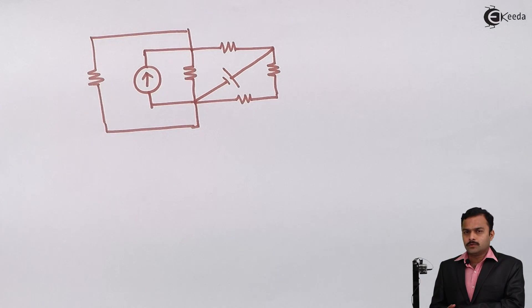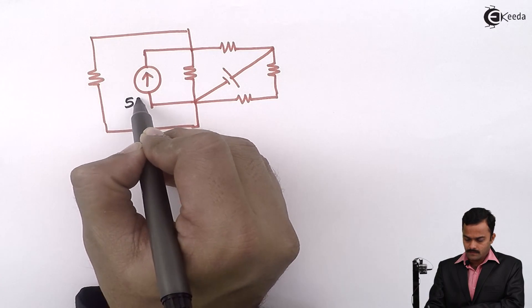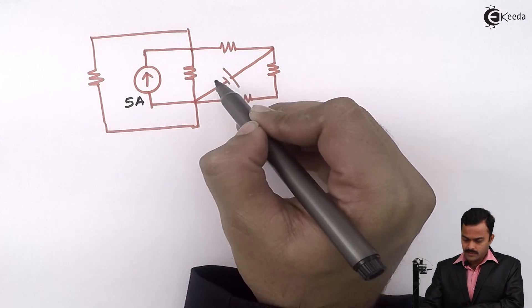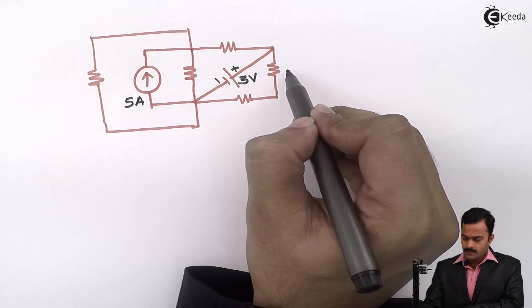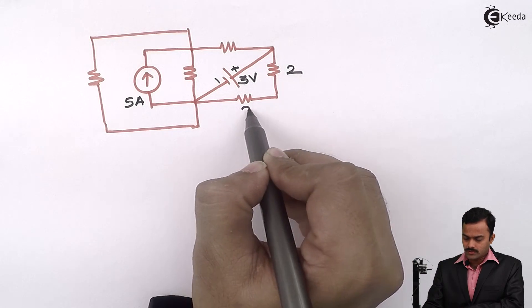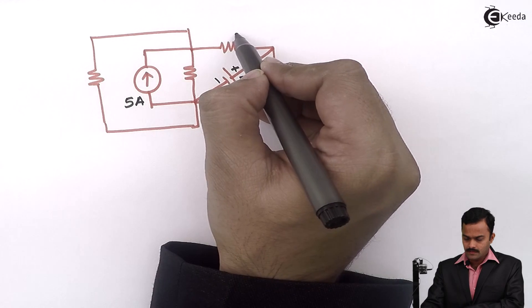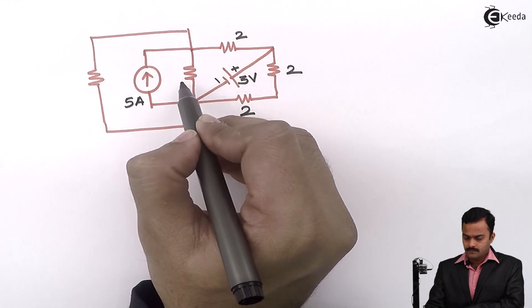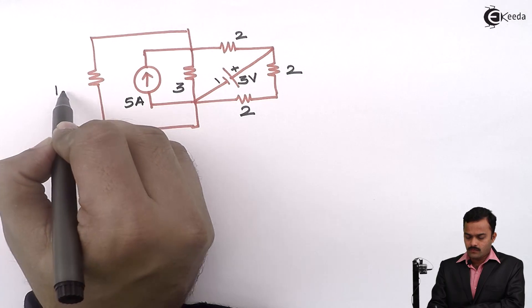Here I am having only two sources, one is a current source of 5 ampere and a voltage source of this polarity having the value 3 volt. Resistance is 2 ohm, this is also 2 ohm, actually these two are in series, this is also 2 ohm, 3 ohm resistance and this is 1 ohm resistance.